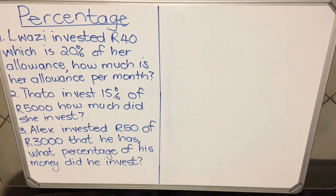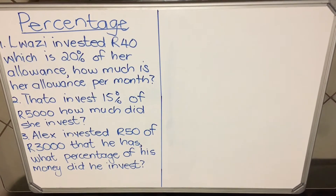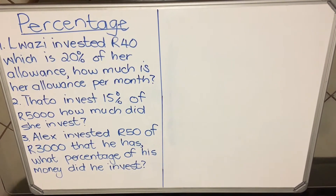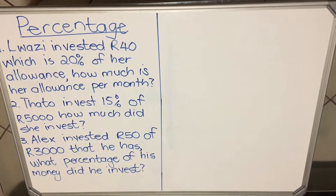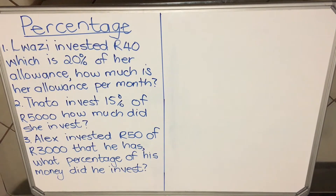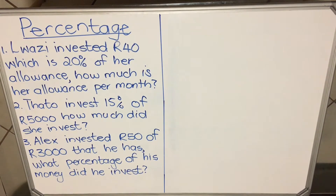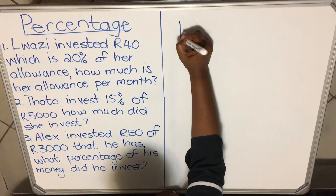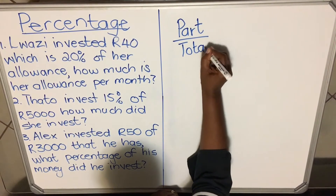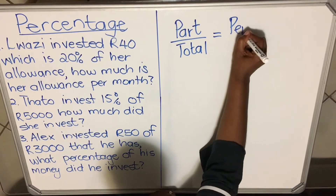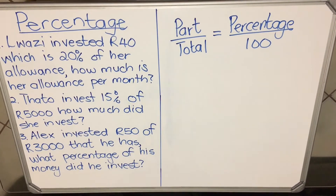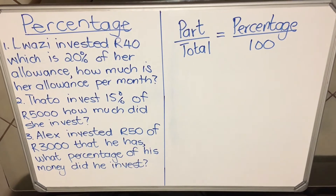Hello everyone, this is a lesson on math literacy. We're going to look at percentages. Sometimes you are asked to calculate the percentage, sometimes you are asked to calculate how much of the percentage. There are three ways they can ask, so I have three examples to show you. There's a formula you can use all the time to get the correct answer: the part divided by the total equals the percentage divided by 100.